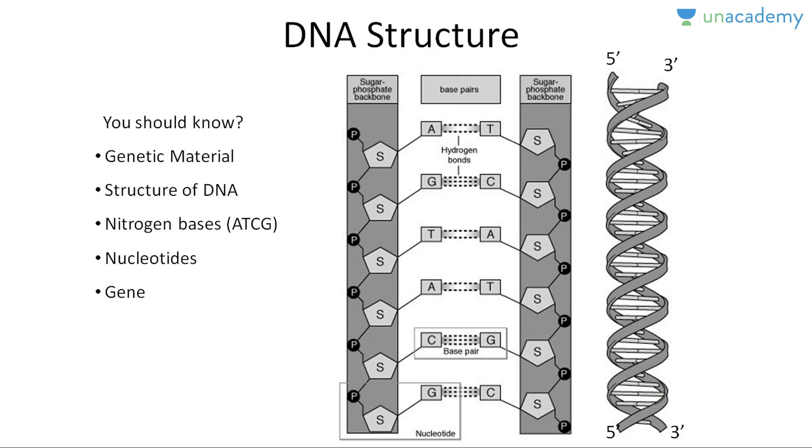Now the complementary property of the DNA is provided by the nitrogenous bases. As you can see in this diagram, this is the detailed version of this double helical structure. This is one strand and this is second strand, and these in the middle are nitrogenous bases which are represented by ATGC. A stands for adenine, T stands for thymine, G stands for guanine, and C stands for cytosine.